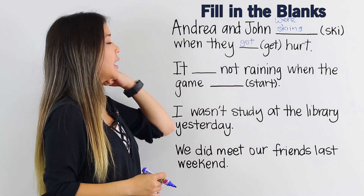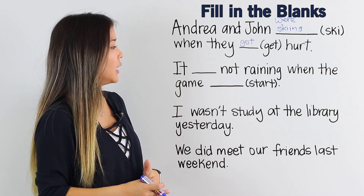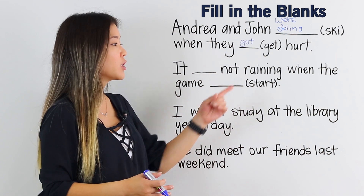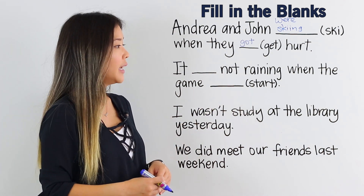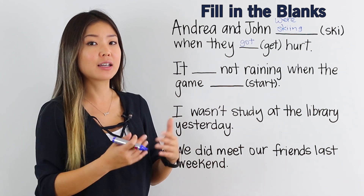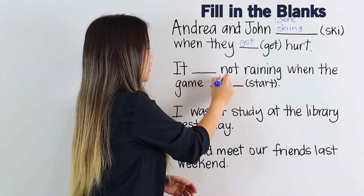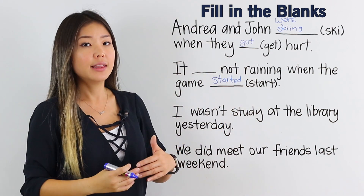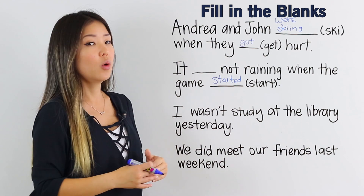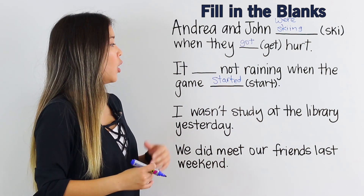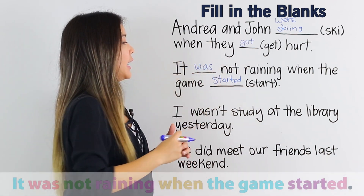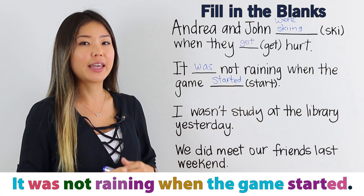The next example says: It blank not raining when the game blank. Use the verb start for the second blank. The past tense of start is started. The subject is it, so the be verb is was. It was not raining when the game started.